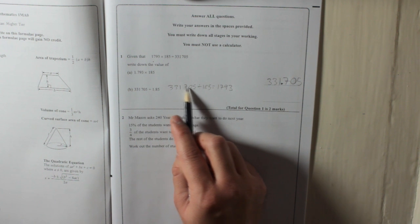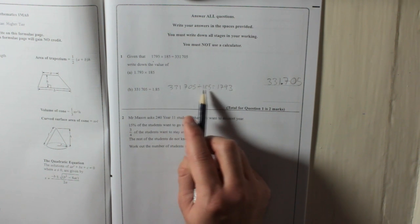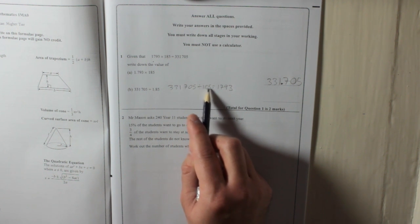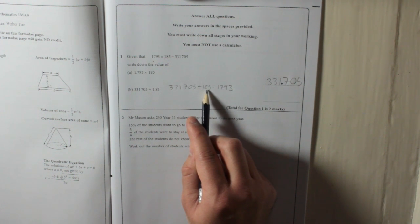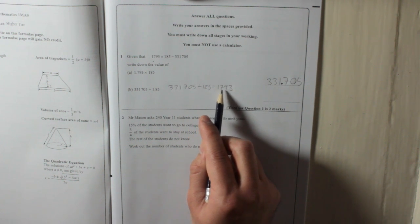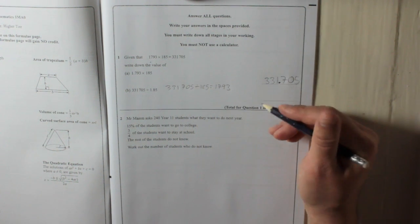Think of it like this. Think of this as the amount of money that you've got, and that's the amount of people that you're going to share it between. If the number of people that you share your money between becomes less, then everyone's going to get more money. So, if 185 has been divided by 100 to get 1.85, then you're going to have to multiply that number by 100 to get the answer.